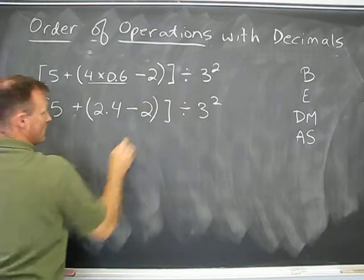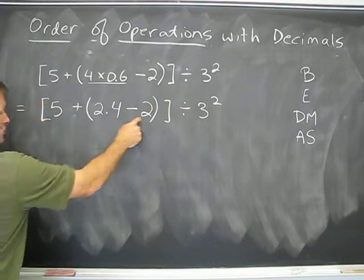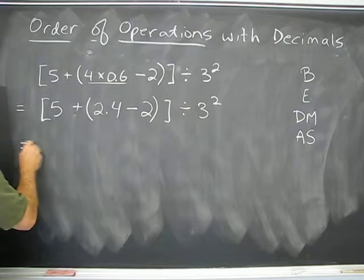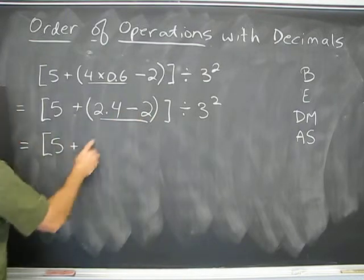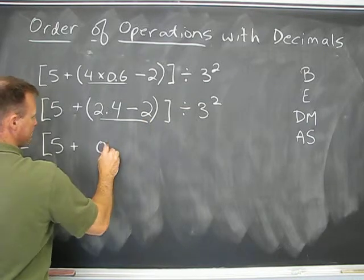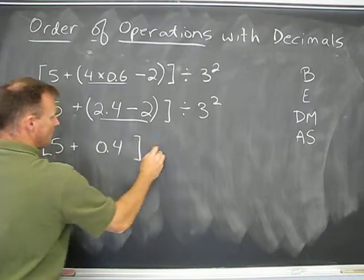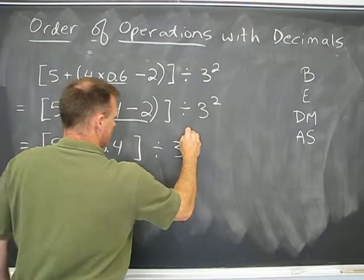Now I still have to write this bracket. Don't forget it because I have to finish off that subtraction now. So, same stuff, recopying this. I'm going to do this subtraction: 2.4 minus 2 is equal to 0.4 divided by 3 squared.